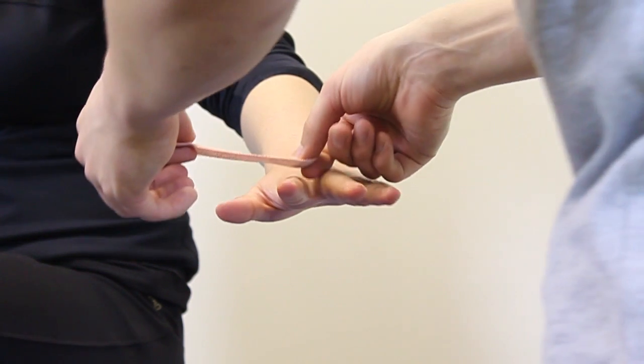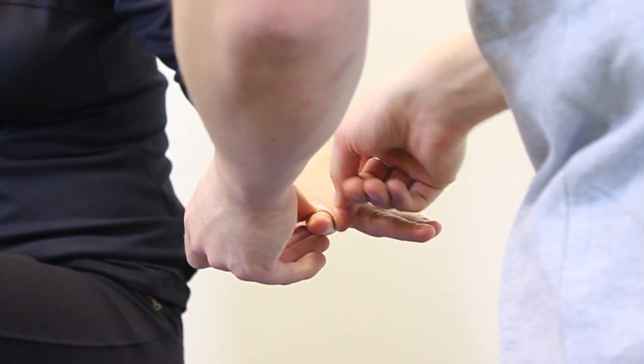This is finger taping. We're going to use this if we've had a previous finger dislocation to help support the fingers. We're going to use the pink finger tape and the foam padding for this.